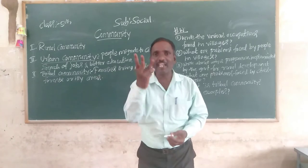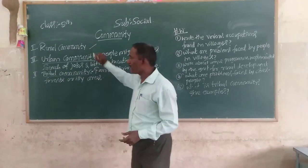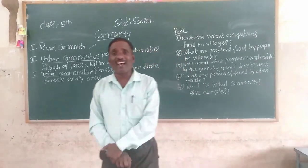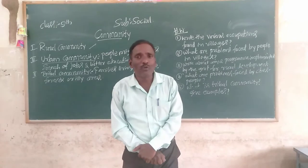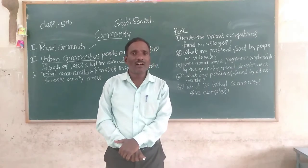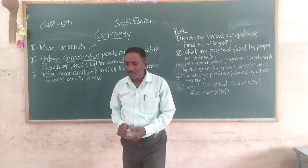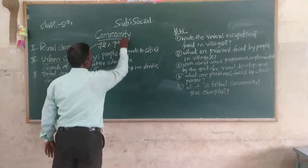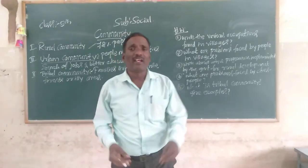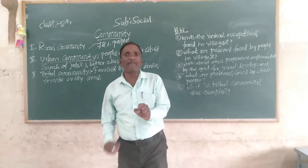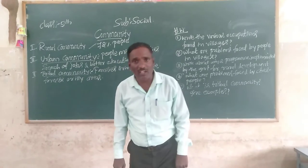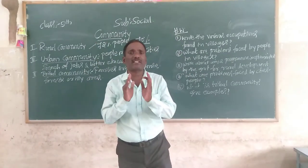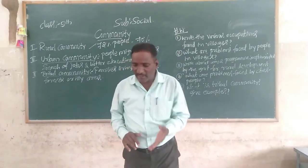Community has three types. First one, rural community; urban community; and tribal community. What is the rural community? Do you know what is a rural area? In India, 72% of people are living in a village. The village is dependent on agriculture. In our country, 70% of the people are dependent on agriculture.